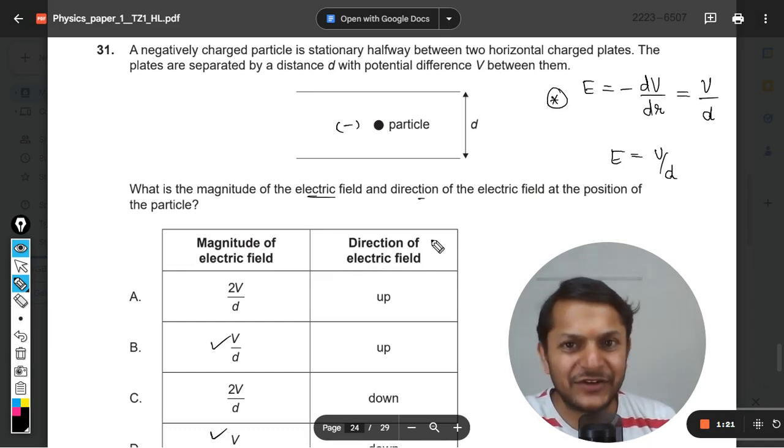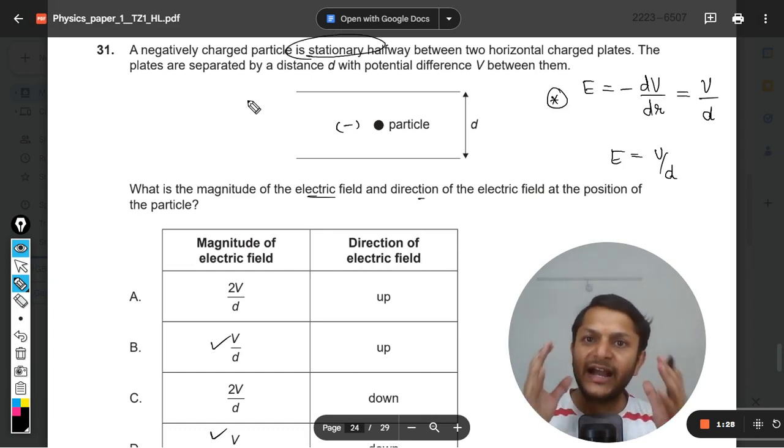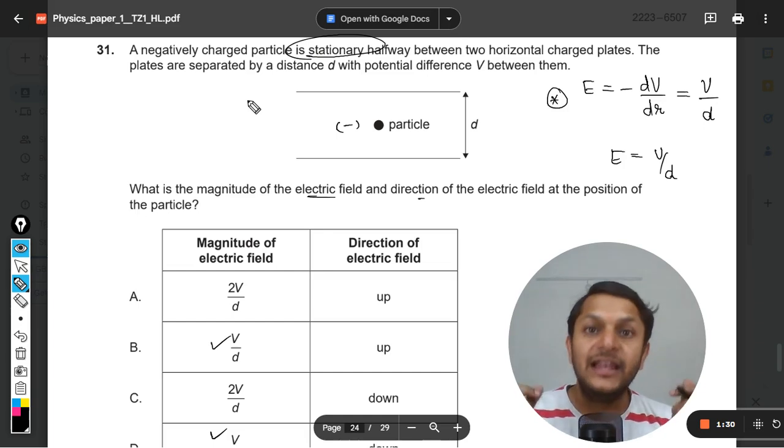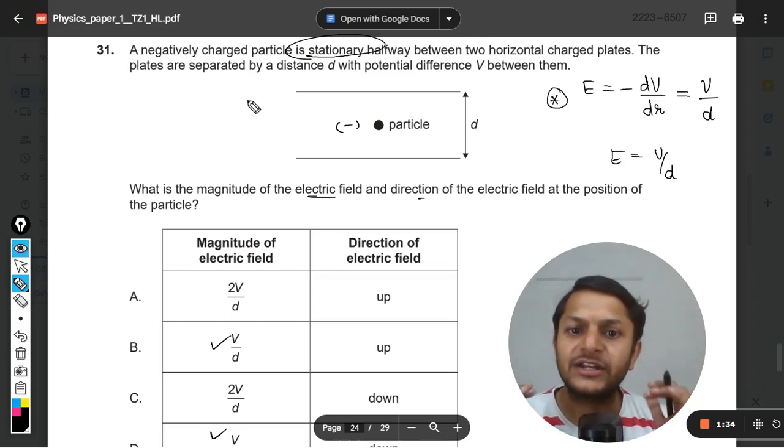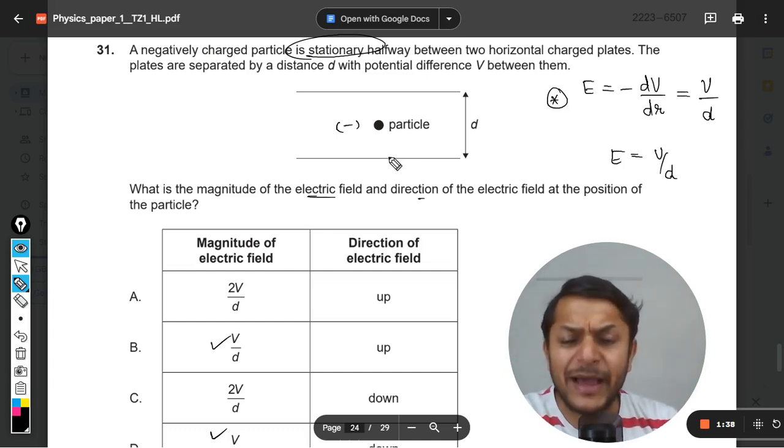Now, direction of the electric field. The electric field, I think, levitating. A negatively charged particle is stationary. It is a negatively charged particle and it is levitating in the space between this. It is neither going up nor going down. It means that the weight is balanced here. The weight is downward direction.